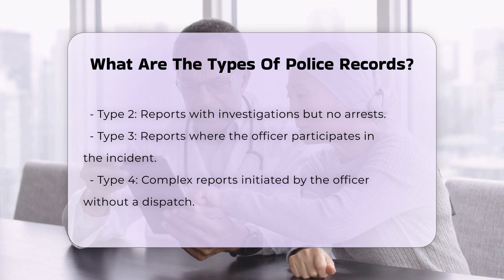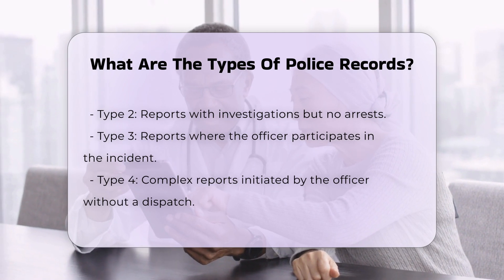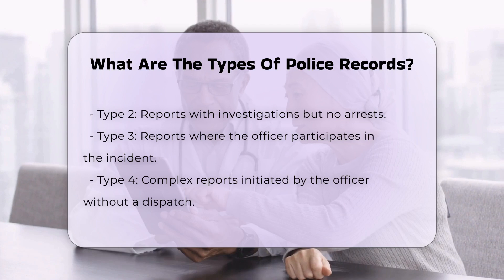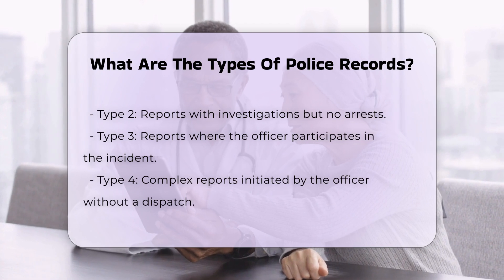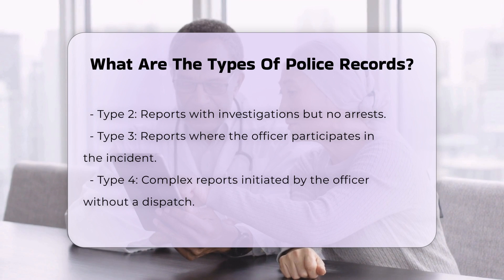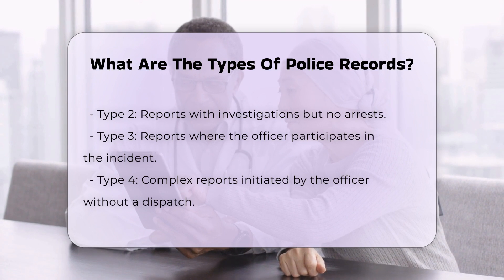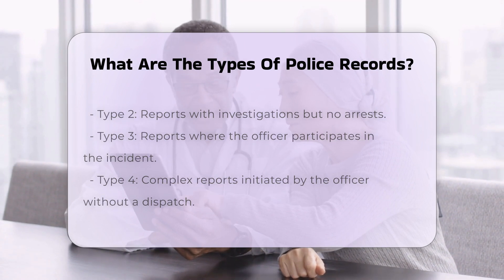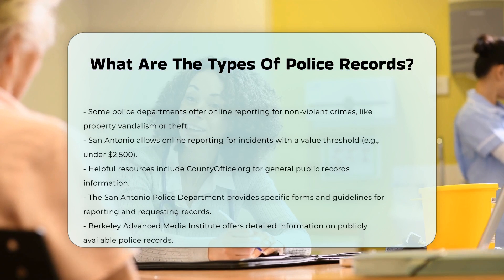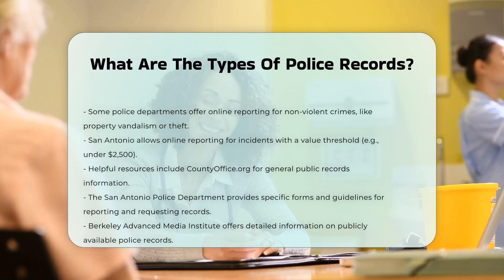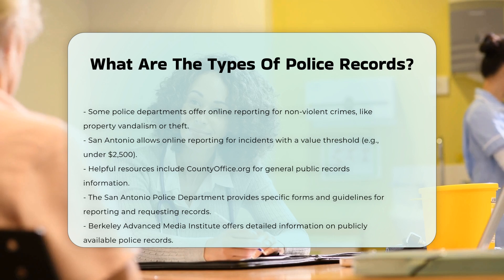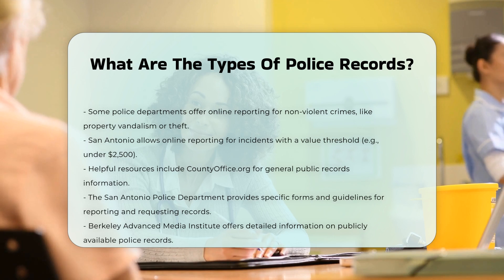Type 2 reports. In addition to recording the facts, these reports involve the officer conducting an investigation, such as looking for evidence or questioning witnesses. However, no arrest is made. Type 3 reports. Here, the officer becomes a participant in the incident, such as intervening in a domestic dispute or making an arrest. The report includes what others did and what the officer did.